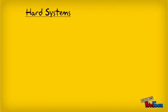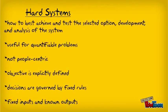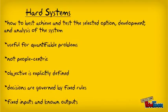Hard Systems look at how to best achieve and test the selected option — development and analysis of the system. Systems are viewed as orthogonal entities existing in the real world. Hard Systems are useful for problems which can be quantified and may tend to treat people as being passive, so Hard Systems are not people-centric. The objective is explicitly defined and decisions are governed by fixed rules.